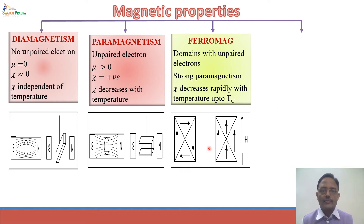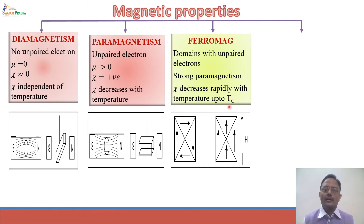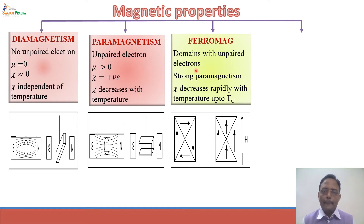If we increase the temperature of a ferromagnetic substance, the size of the domains decreases rapidly. As a result, the magnetic susceptibility, which is a large positive value at normal temperature, decreases rapidly with increasing temperature up to a particular temperature called the Curie temperature. At the Curie temperature, all domains have broken down and the substance behaves as if it is paramagnetic. After the Curie temperature, there is a small and steady decrease in chi value, similar to a paramagnetic substance.